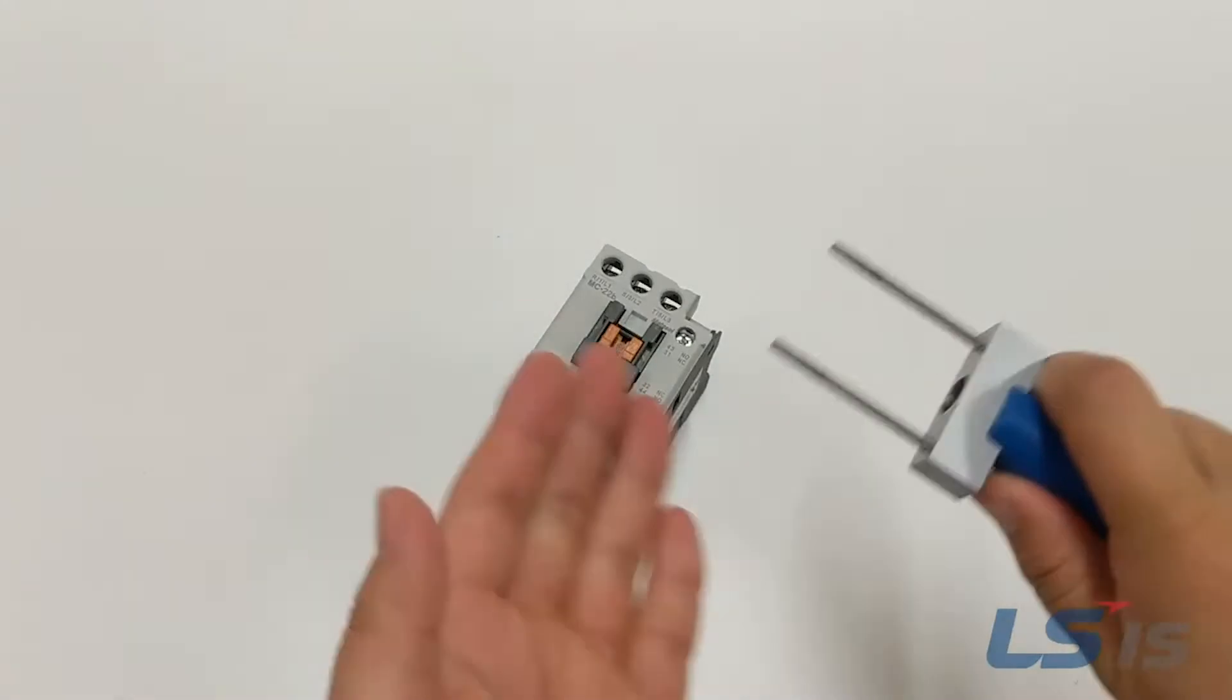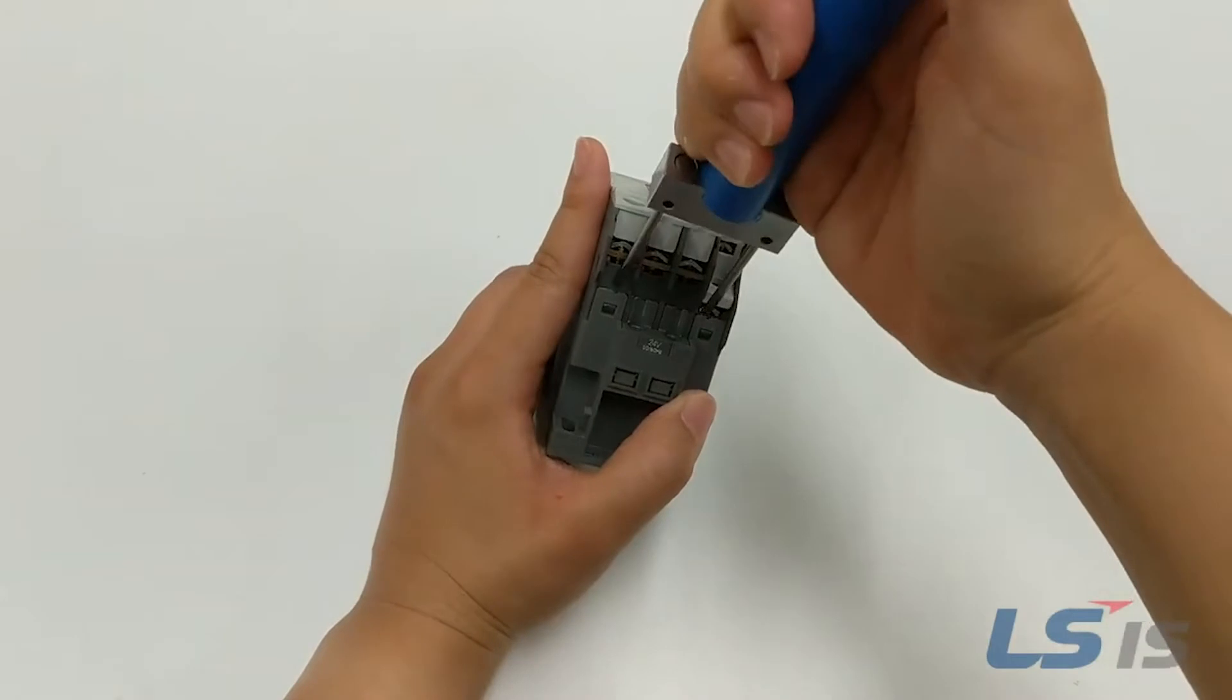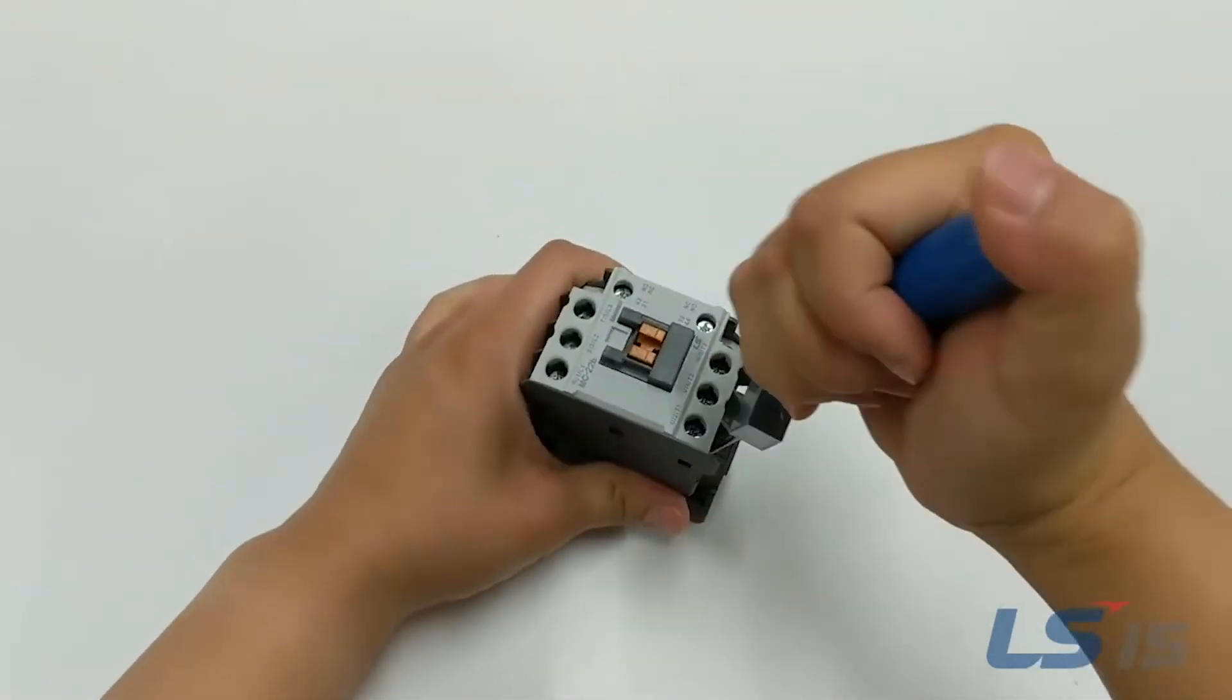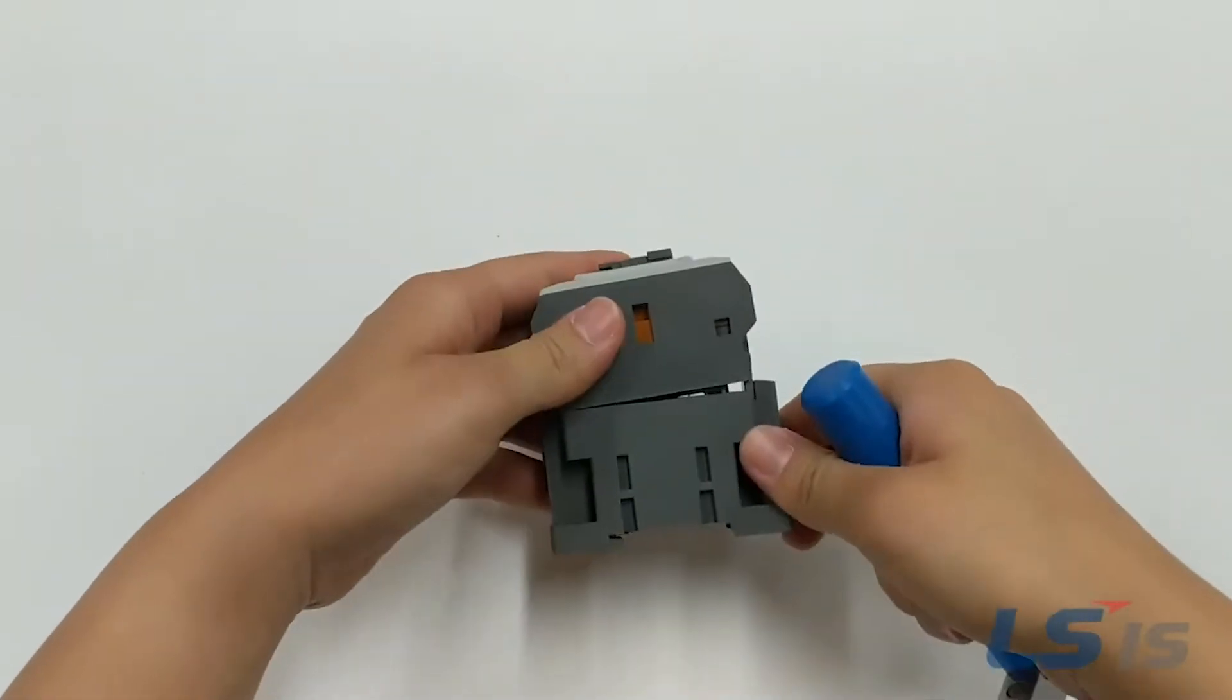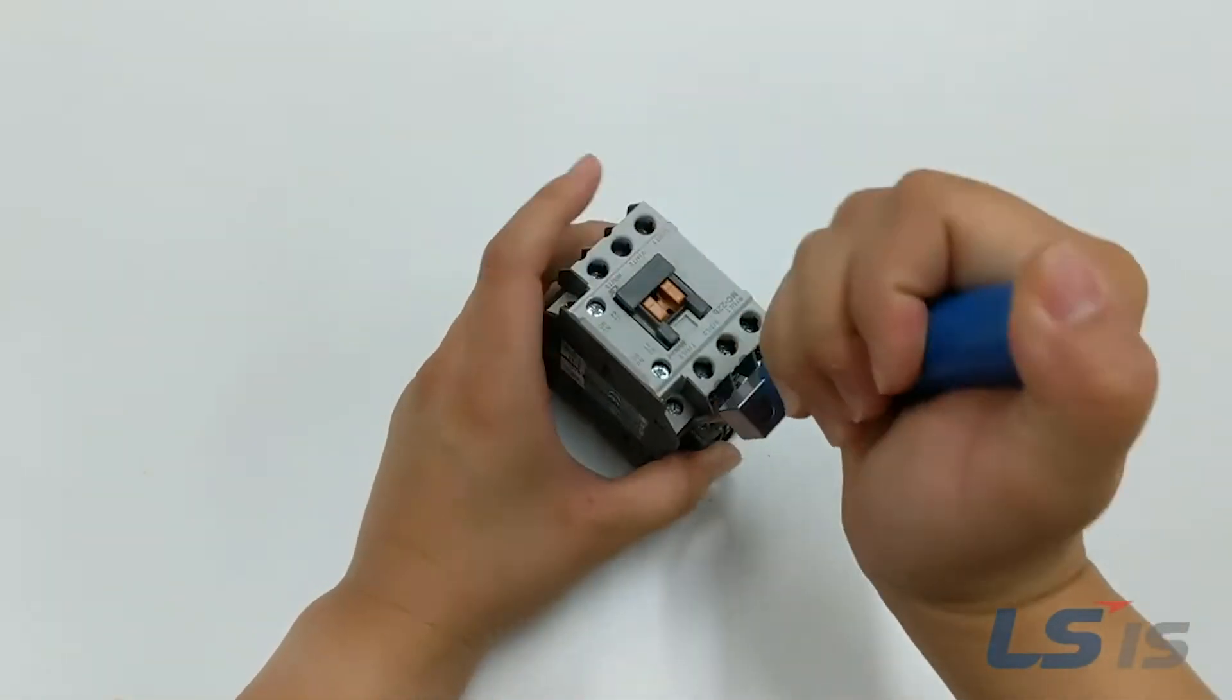Using your LSIS contactor tool or a flathead screwdriver, insert the blades into the outer plastic tabs and pull toward the body of the contactor in order to separate the tabs from the top. Repeat on the other side to fully separate the bottom half from the top half.